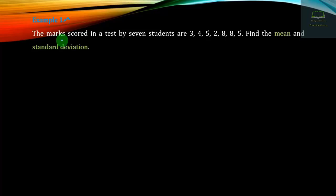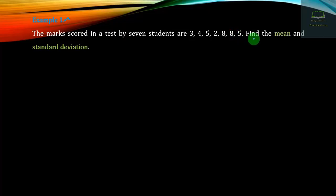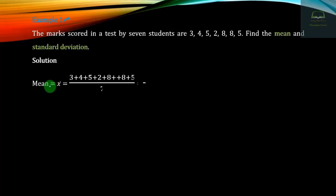The next problem is about the max score in a test by seven students. We need to find the number of students who have the highest score, and then calculate the mean and standard deviation. The first question will ask for the mean and standard deviation of the average score.